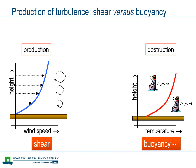However, buoyancy can also work the other way around. If the temperature close to the surface is lower than further away from the surface, vertical motion will be damped. If cold air moves up, it finds itself where the ambient air is warmer and thus has a higher density, causing the parcel to move back to its original position. In this situation, shear is the turbulence-producing mechanism, whereas buoyancy suppresses turbulence.